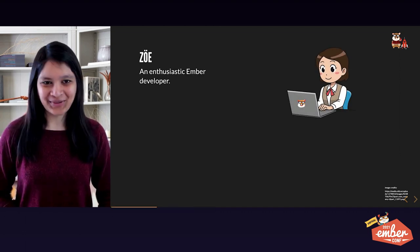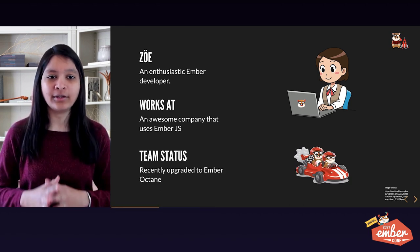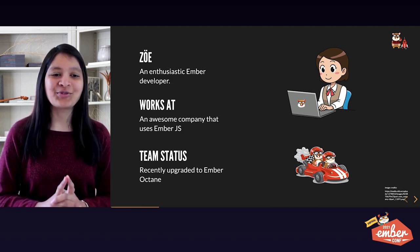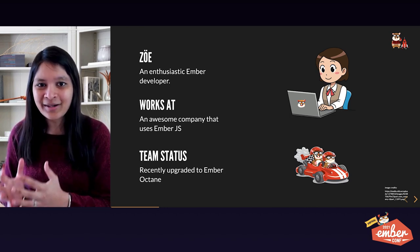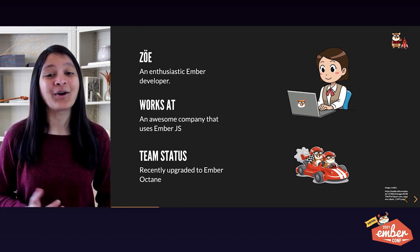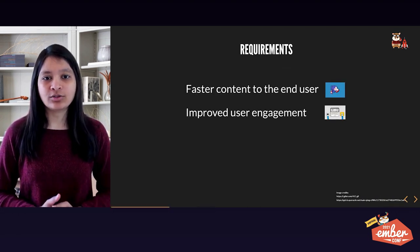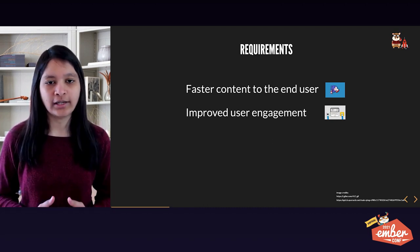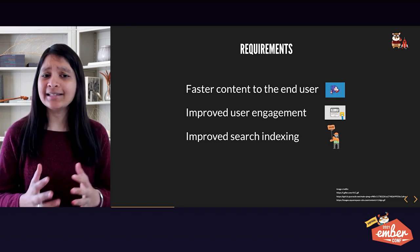So let's begin the story. Zoe is an Ember developer who is super enthusiastic about Ember and is leading the web team at an awesome company that uses Ember.js as its framework. The current status of this team is that they recently migrated to Ember Octane and are super happy with it. However, soon after they got a few new requirements — which is very normal in our industry. Their requirements were: to deliver faster content to the page, to improve user engagement especially for countries with slower networks, and to improve the SEO or search indexing factor for a specific route.